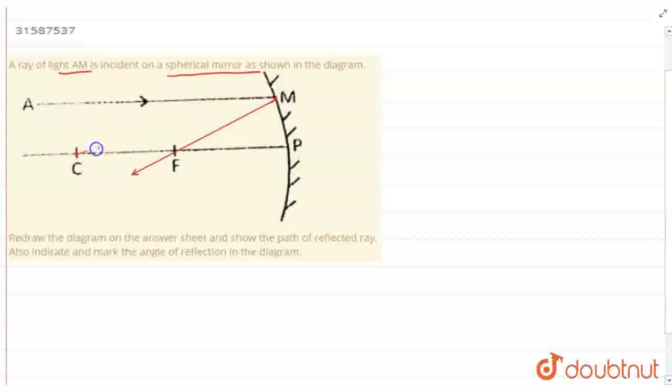I'll join this with a dotted line. So this is my normal. C is center of curvature, F is focus. So the line from C to M is the normal at the point of incidence.